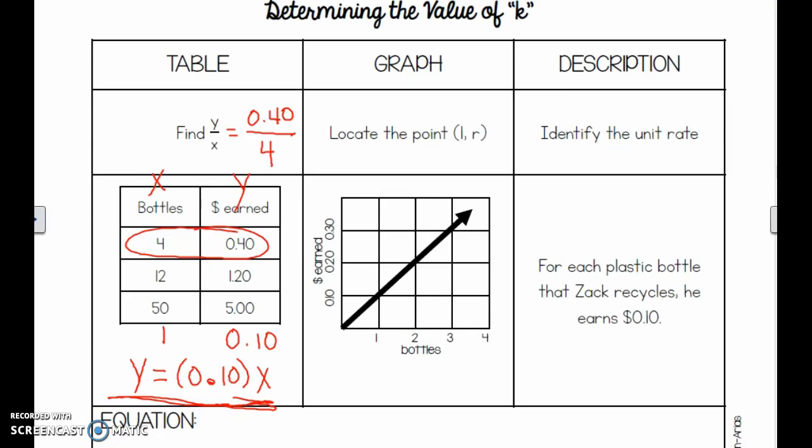It's pretty basic, but it's hard to think about it sometimes. So what if we have a graph? Let's locate the point 1r. Now we know from yesterday that this point is the unit rate or the constant of proportionality. So this is one way for us to figure it out. Now if I just look at this, I know that the 1 corresponds to 10 cents. So again, I write y equals 10 cents times x. That's all we're doing. We're just writing the equation. This says identify the unit rate. For each plastic bottle that Zach recycles, he earns 10 cents. We write it again. Y equals 10 cents times the number of bottles I buy. So let's just refresh your memories here. X is the number of bottles. Y is the total cost. Oh, I'm sorry, money earned. I said that wrong. So every time he recycles, he earns 10 cents for each bottle.